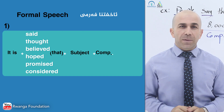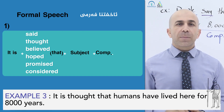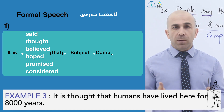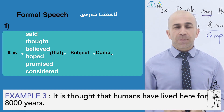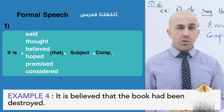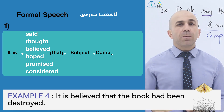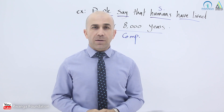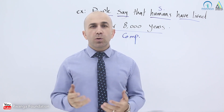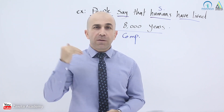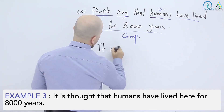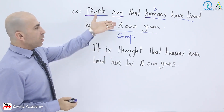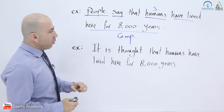Now let's take two examples. The first one: it is thought that humans have lived here for 8,000 years. Now let's write the other example on the board and analyze it. The first one is informal and the second one is formal — 'it is thought.'